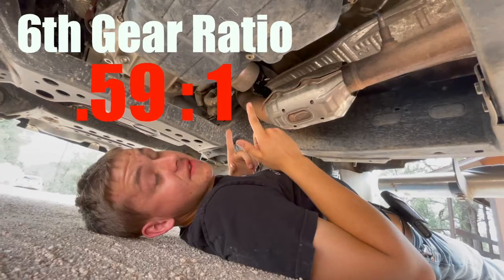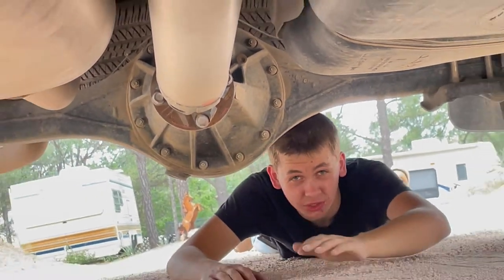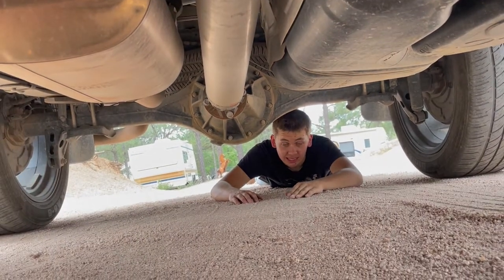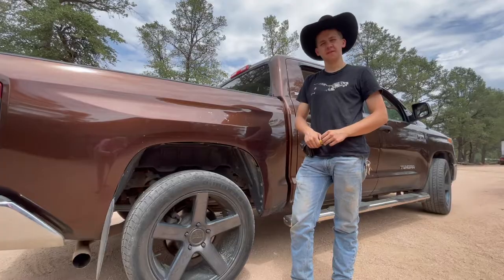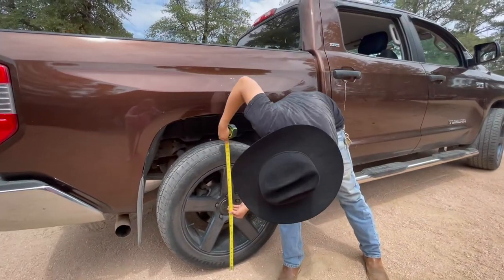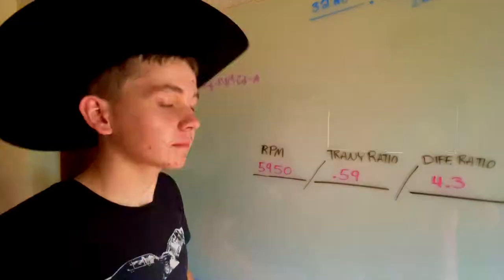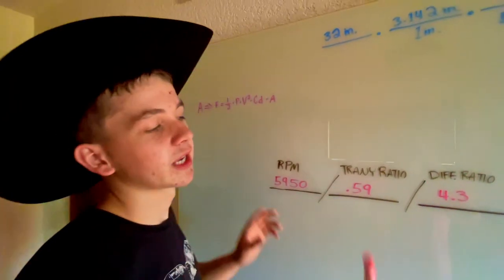The third step is knowing what your final drive ratio or differential ratio is. In this case, 4.3 to 1 rear end. The fourth step is to measure the diameter of your tire: 32 inches sharp. Let's go do some math.